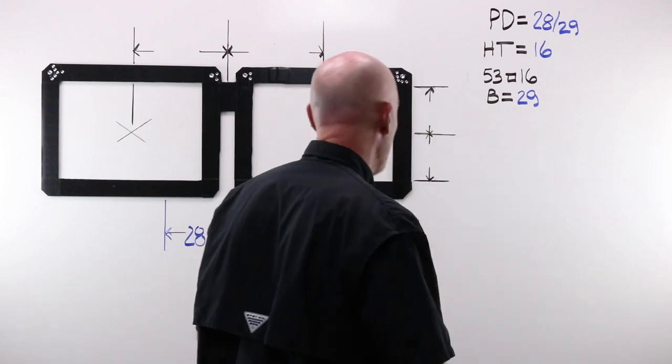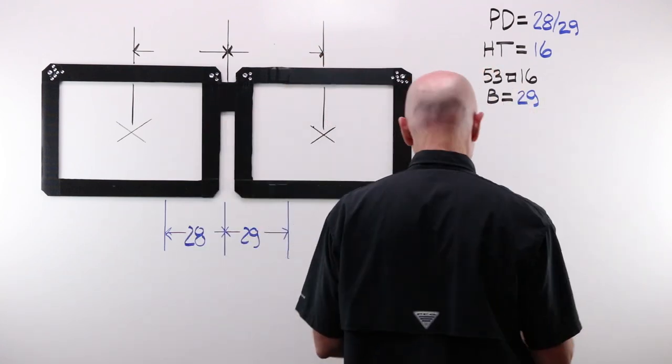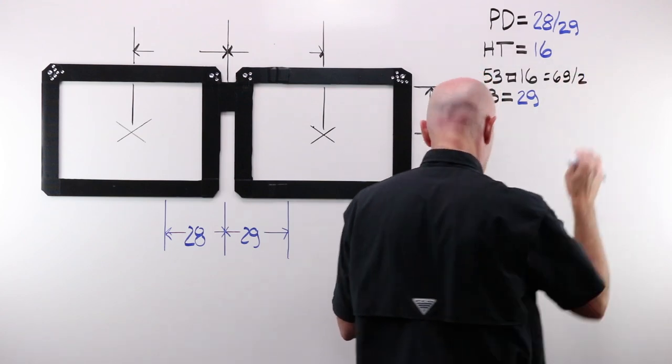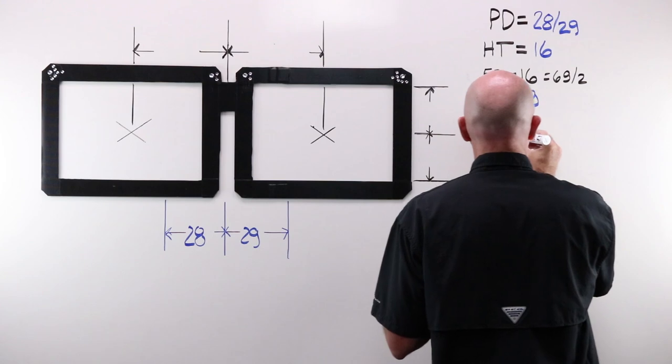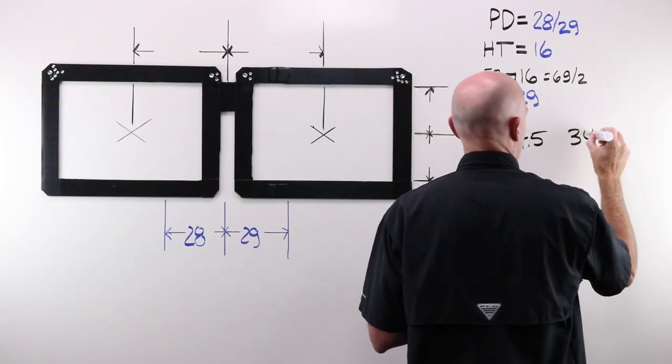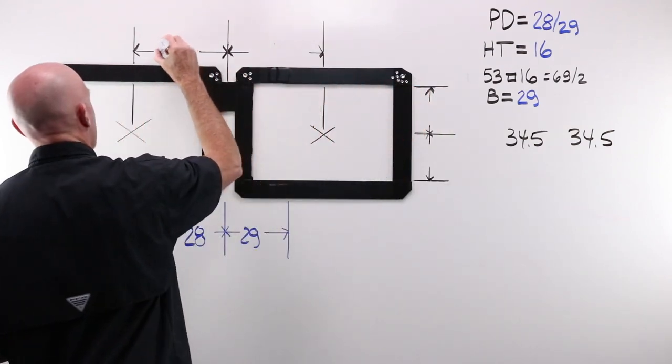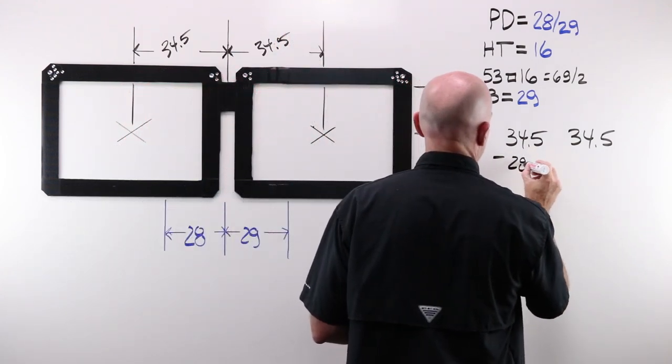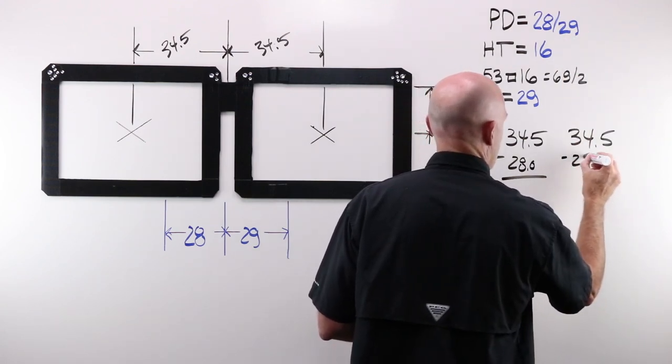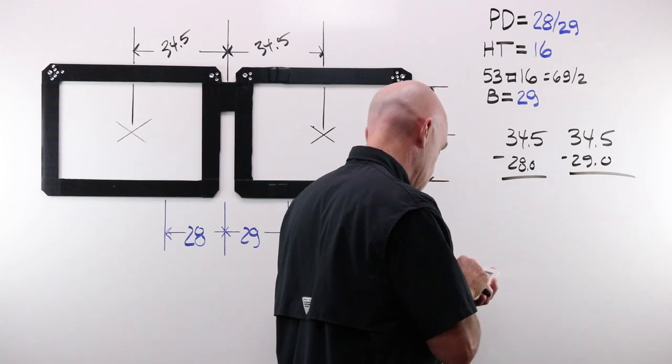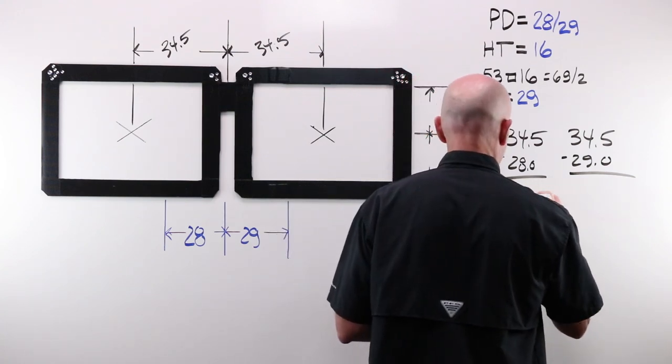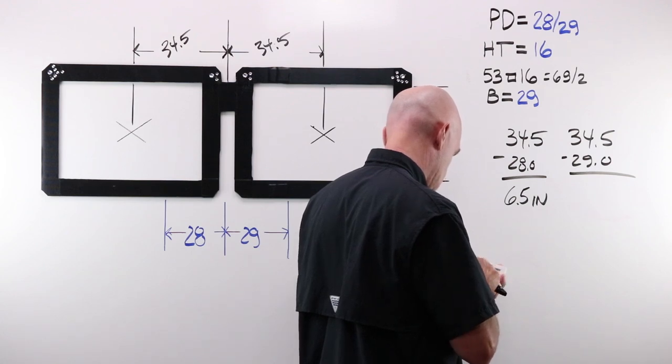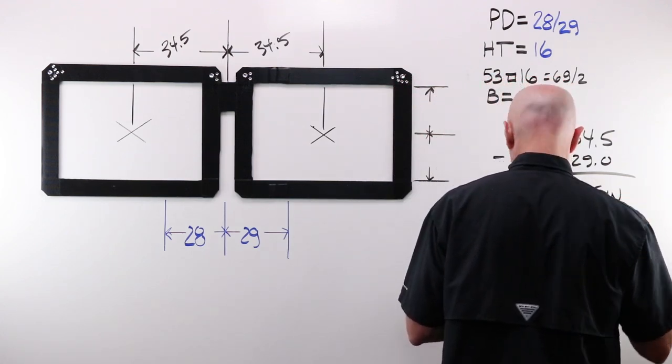Example number two. We have got a super frame measurement of 53,16. Which gives me 69. 69 divided by two. Gives me 34.5. All right. 34.5 minus 28 and minus 29.